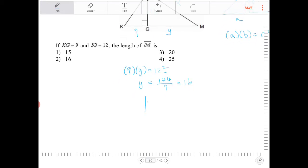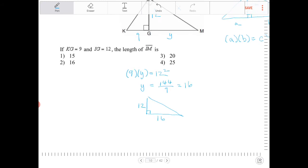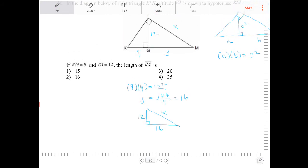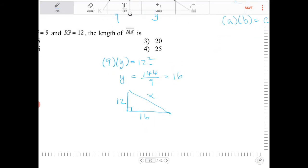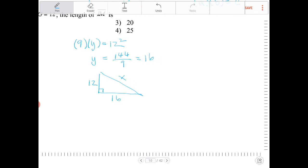And since we're dealing with a right triangle there, we can say 12 and 16 form the legs of the right triangle, which we're trying to solve for X. So I can apply Pythagorean theorem. However, this is a 3-4-5 triangle, but if you don't recognize that, you can certainly use the Pythagorean theorem.